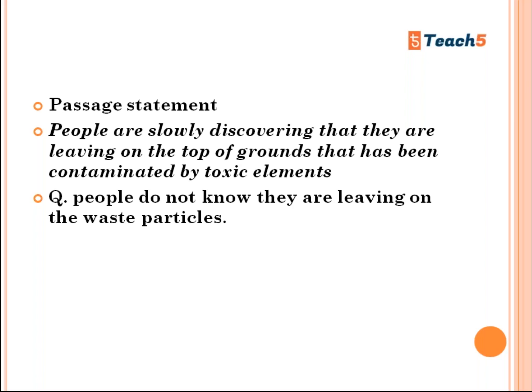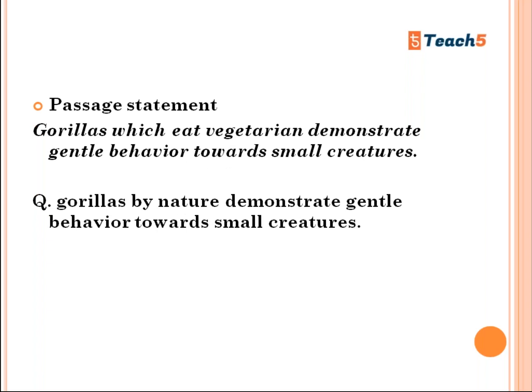The next example: 'Gorillas, which eat a vegetarian diet, demonstrate gentle behavior towards small creatures.' The question is: 'Gorillas by nature demonstrate gentle behavior towards small creatures.' Students may put Not Given or False, thinking the passage says nothing about nature. But the overall conclusion is about the behavior of gorillas — whether a gorilla eats vegetarian or non-vegetarian doesn't determine gentleness; by nature, gorillas are gentle.